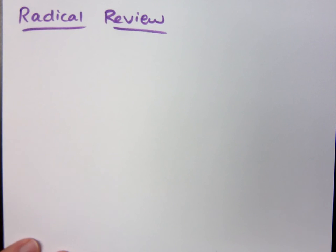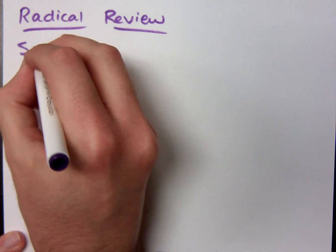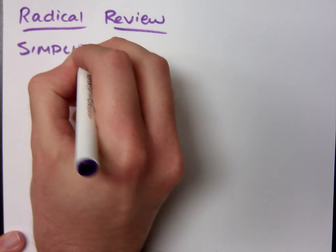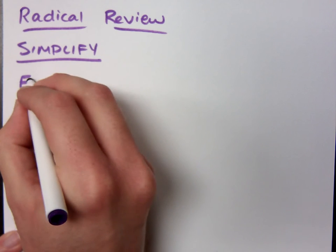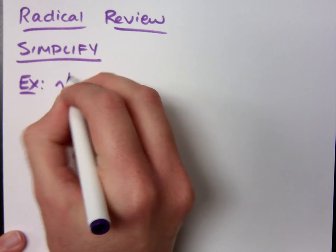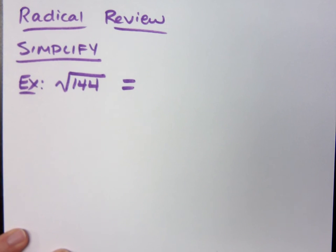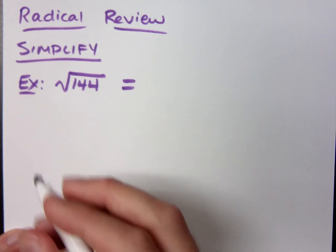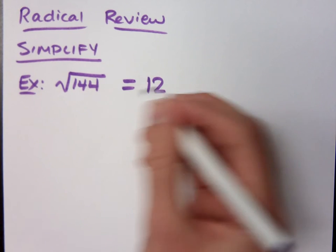So let's quickly review what we know about radicals. This is stuff that we should be familiar with, and all you need to do is simplify. So let's just go through these problems quickly and see what you guys remember. What would you say to this guy, the square root of 144? 12? Yes, life is easy.